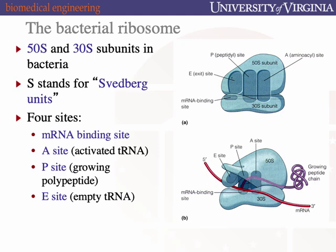Eukaryotes follow the same logic — the numbers still don't add. It's 60S large subunit, 40S small subunit, adding together to give 80S for the fully assembled eukaryotic ribosome.